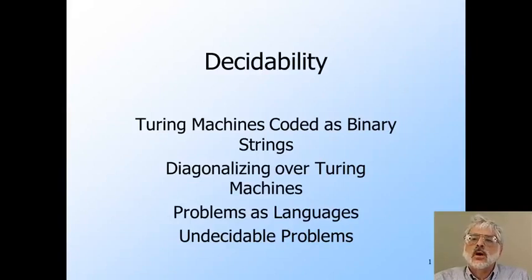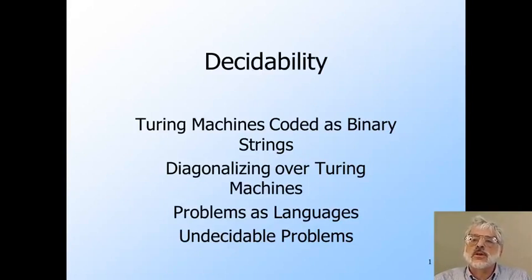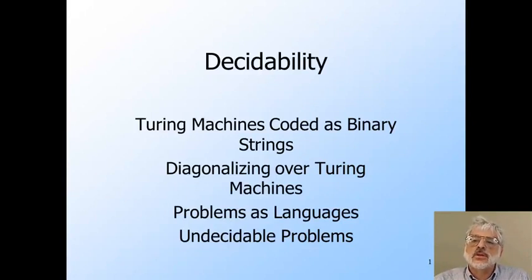Now we are ready to show some particular problems that do not have algorithms. The central ideas for this lecture are: first, that Turing machines can be enumerated, so we can talk about the i-th Turing machine. That lets us diagonalize over Turing machines the way we diagonalized over languages, showing a particular language that cannot be the language of any Turing machine.